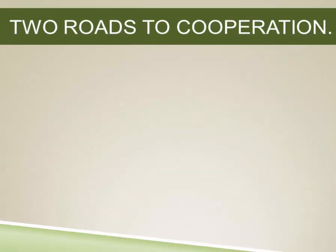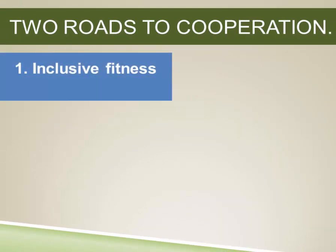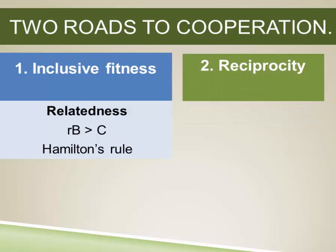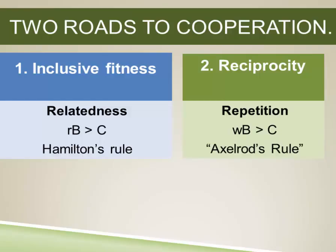So far, we've considered two roads to the evolution of cooperation. One of these is based on Hamilton's rule and the concept of inclusive fitness, where close genetic relatedness is fundamental. But we've also now looked at reciprocity, which is based on repeated interactions. In this case, close relatedness isn't important, but the likelihood of interacting again is important.